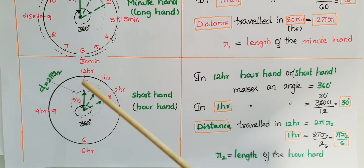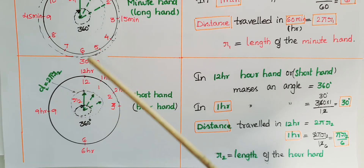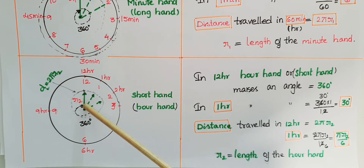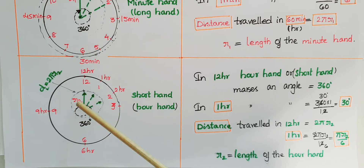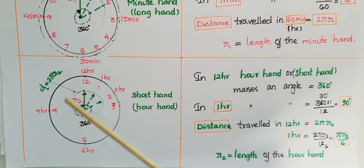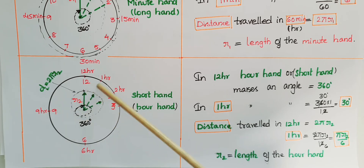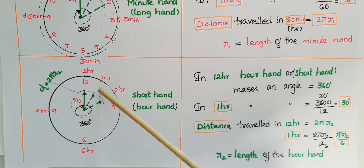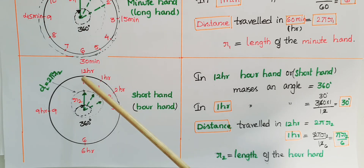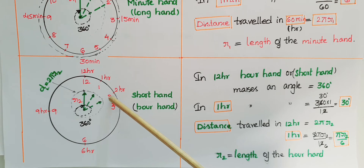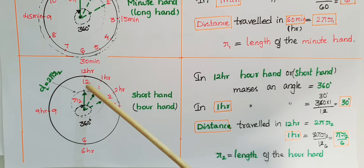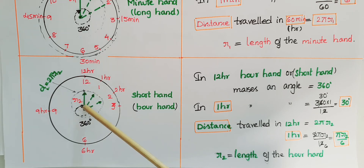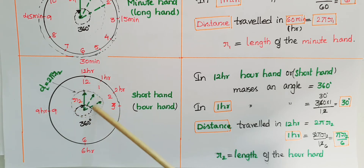This is the short hand. Generally the short hand and minute hand (long hand) are both in one clock, but here I have shown them in two figures for clarity. Let the short hand's length be r2. If the hour hand reaches 1 it takes one hour, if it reaches 2 it takes two hours, and it takes 12 hours to reach 12. So it makes 360 degrees in 12 hours, and the distance traveled by the hour hand is 2πr2 in 12 hours.